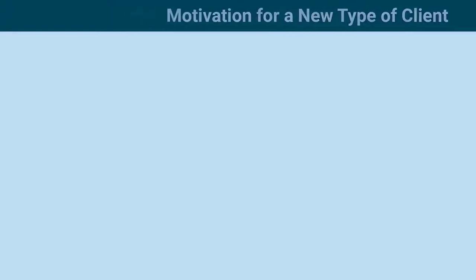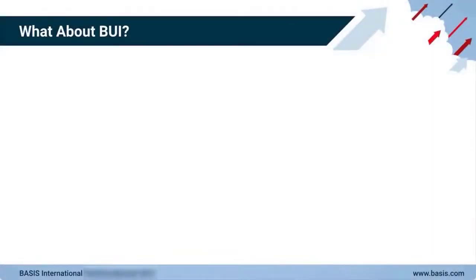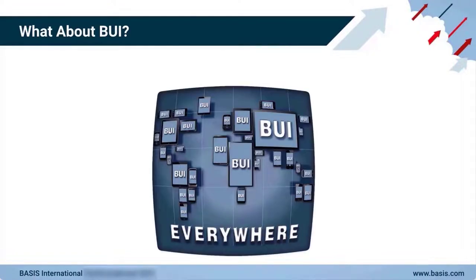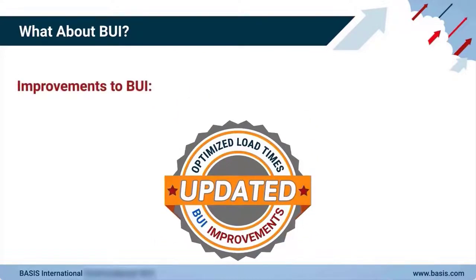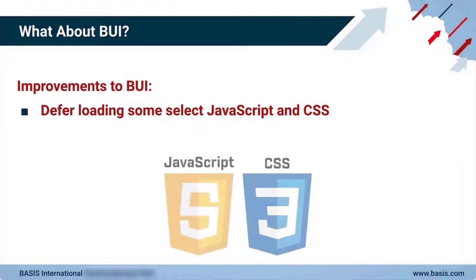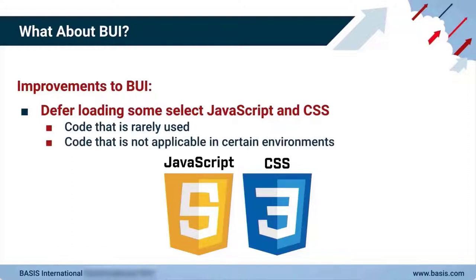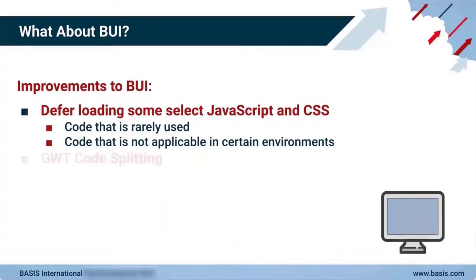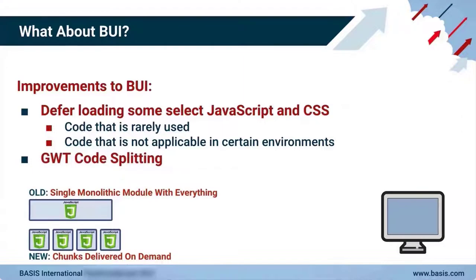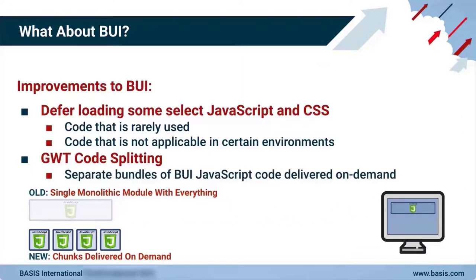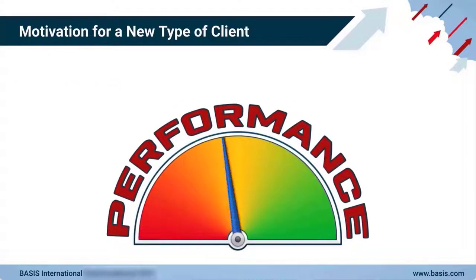Why is Basis writing a brand new client instead of just improving upon BUI? Well, for starters, we did make improvements to BUI to optimize the initial load times. We changed BUI to defer its loading of select JavaScript and CSS that typical apps rarely use, or aren't even applicable in certain environments, such as tooltip support in a touch environment. We also employed GWT code splitting to segment the BUI JavaScript code into separate code bundles that are delivered on-demand to the browser.